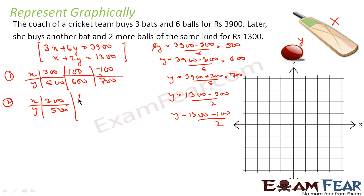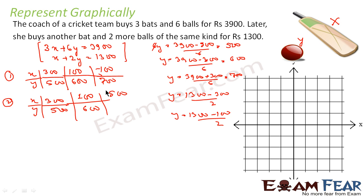I can see both the first two points are the same. So let me take a different value: x = 500. Then y = (1300 − 500) / 2 = 400. So the third point for equation 2 is (500, 400). Now let me plot the graph.